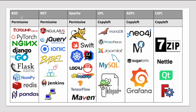Some examples: BSD licenses are used by tcpdump, PyTorch, nginx, Go. MIT licenses are used by Angular, Ionic, Box2D, Jenkins. Apache licenses are used by Tomcat, Swift, Kubernetes, IntelliJ, Log4j, TensorFlow — these are all permissive in nature. Copyleft licenses include MariaDB and WordPress — you can utilize them, but if you modify the source code you have to make it available to the wider audience.